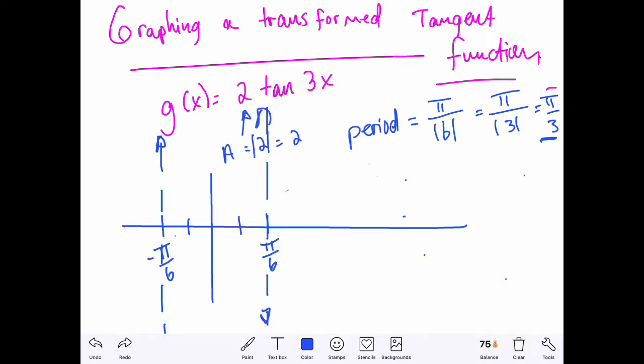x equal to π sixth and, of course, x equal to negative π sixth. So if we begin with those asymptotes, then we'll do better.